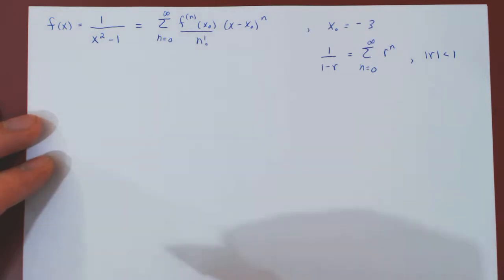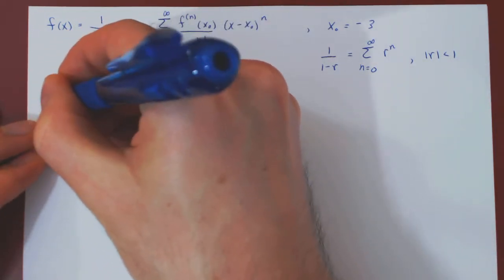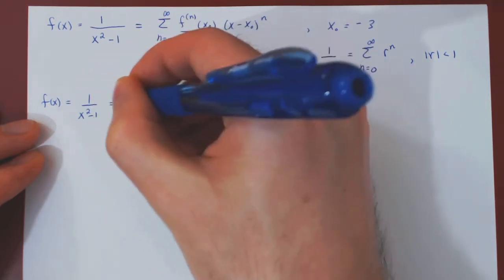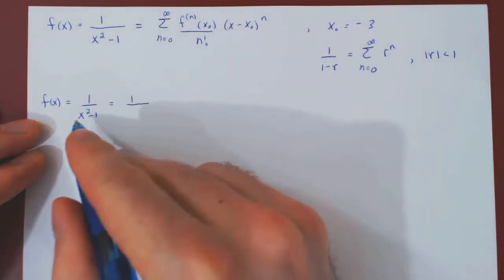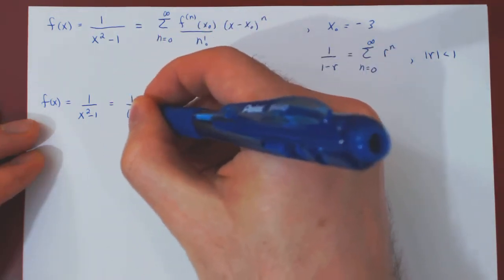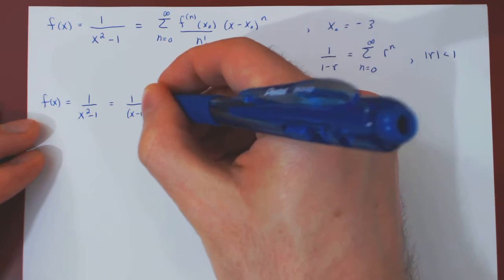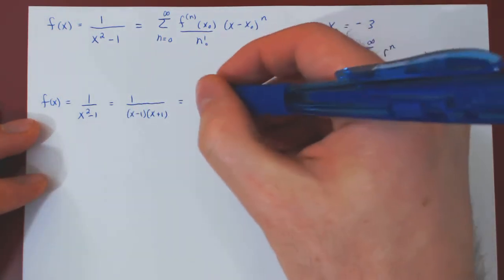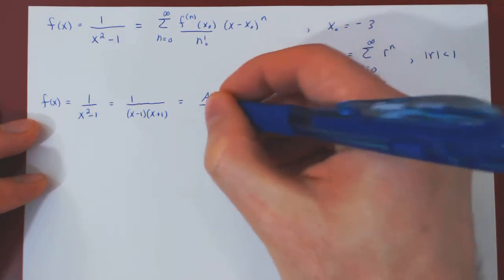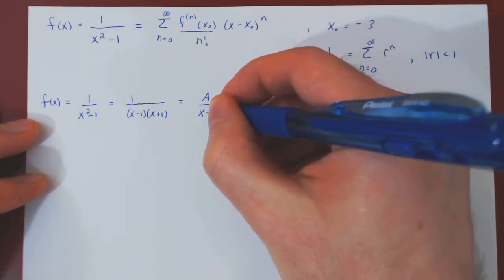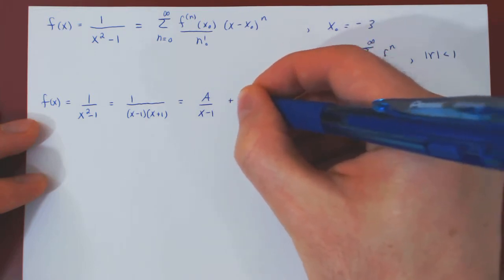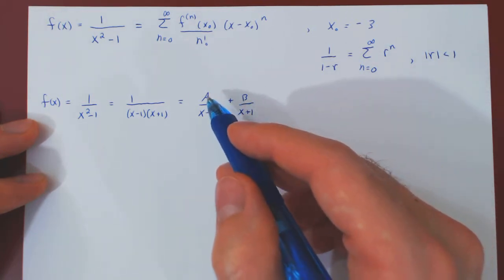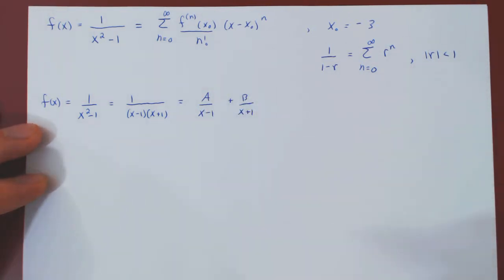Now let's take the function f of x equals 1 over x squared minus 1. We can factor x squared minus 1 as (x minus 1)(x plus 1), and then decompose this rational function into a sum of two partial fractions: some multiple over (x minus 1) plus some multiple over (x plus 1). I will leave it to you as an exercise to find that a is 1 half and b is also 1 half.